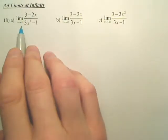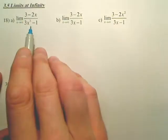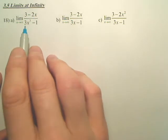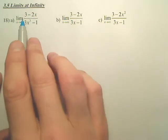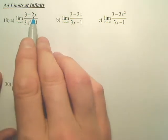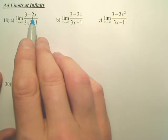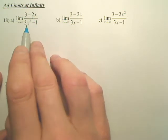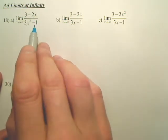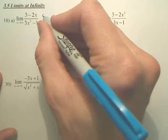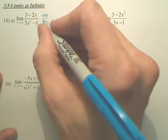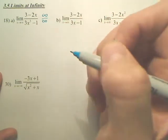Limits at infinity. When we plug in infinity, we get infinity over infinity. Actually, we get 3 minus infinity and infinity minus 3, minus 1. You get infinity over infinity, which is indeterminate.